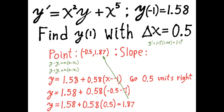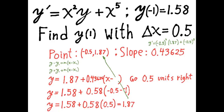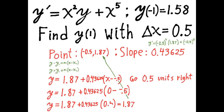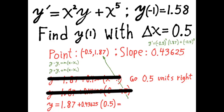So I rewrite my next point as negative 0.5 comma 1.87, and I start over. I have to recompute the slope again using the differential equation x squared y plus x to the fifth, but with the new x and y values, and I get a new slope. This slope and the new point are used to get a new linearization function. Notice that the subtraction x minus x_previous is always going to be 0.5 because we're always moving 0.5 units to the right. So from now on I can skip those steps — I just take the previous y value and add 0.5 times y prime to get my new y value.